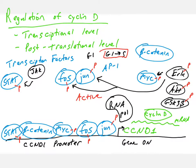You then get translation and produce cyclin D1 protein. The cyclin D1 promoter is actually very complicated, regulated by many different proteins. In the next video, we're going to talk about how cyclin D levels are regulated at the post-translational level. To summarize: when cells are in G1, many transcription factors are inactive so the gene is kept off. When cells get a signal to go through the cell cycle, transcription factors become activated, bind the promoter, recruit RNA polymerase, and cyclin D is transcribed and translated — and cyclin D protein levels begin to rise.